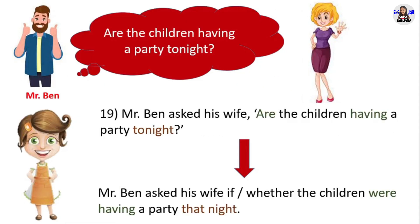Next example: 'Are the children having a party tonight?' Mr. Bay asked his wife 'Are the children having a party tonight?' in direct speech. In reported speech, Mr. Bay asked his wife whether the children were having a party that night. This is a yes/no question — remember, we always use 'if' or 'whether' before the reported question, but you can use only one of them. 'Are having' in present continuous changes into 'were having' in past continuous. The time expression 'tonight' changes into 'that night.'